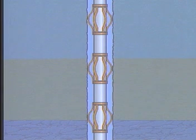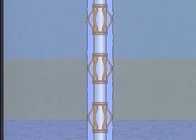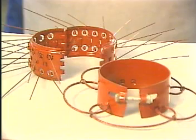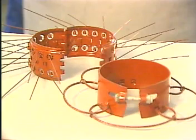Several techniques, which are often combined, are pipe centralization to allow uniform displacement of the mud by the cement, pipe movement — either reciprocation or rotation with scratchers to improve displacement in enlarged hole areas — and the high displacement rates and turbulent flow regime mentioned earlier.